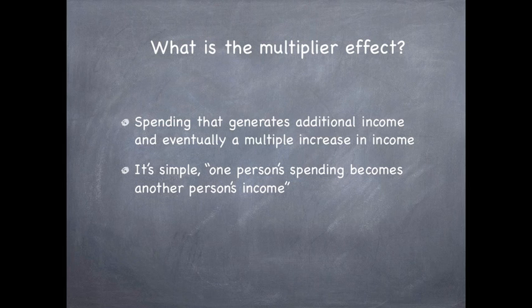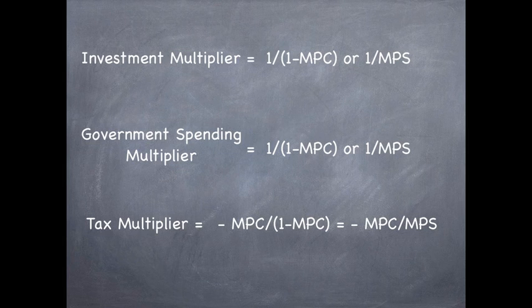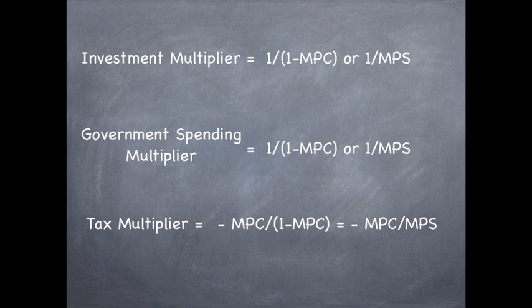One person's spending becomes another person's income. We have three different multipliers. The investment multiplier and the government spending multiplier equal 1 divided by 1 minus the marginal propensity to consume, or 1 divided by the marginal propensity to save. The tax multiplier equals negative MPC divided by 1 minus MPC, which equals negative MPC divided by MPS.